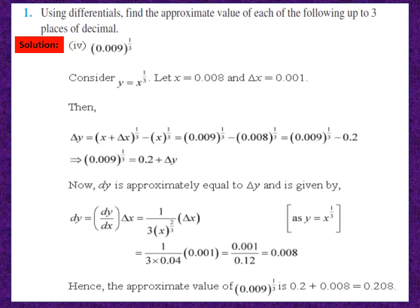By definition, delta y = (x + delta x)^(1/3) − x^(1/3). Putting the values: x + delta x = 0.009, so delta y = (0.009)^(1/3) − (0.008)^(1/3). We know the cube root of 0.008 is 0.2. After transposition, (0.009)^(1/3) = 0.2 + delta y. Now we need to find delta y. The approximate value of delta y is dy, and dy = (dy/dx) × delta x. Since y = x^(1/3), dy/dx = (1/3)x^(−2/3). Putting the values of x and delta x, dy = 0.008 (that is, approximately 0.001/(3×(0.008)^(2/3))). Hence the approximate value of (0.009)^(1/3) = 0.2 + 0.008 = 0.208.